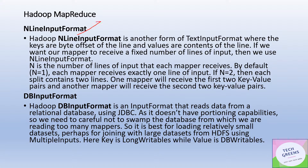NLineInputFormat is an important one — understand it carefully. It is the same as TextInputFormat except that while each individual line makes one key-value pair in TextInputFormat, with NLineInputFormat you can redefine the system so that, say, two lines go to each mapper. You set N=2, and two lines together will make one key-value pair as input to the mapper. That is the key difference between NLineInputFormat and the default TextInputFormat.